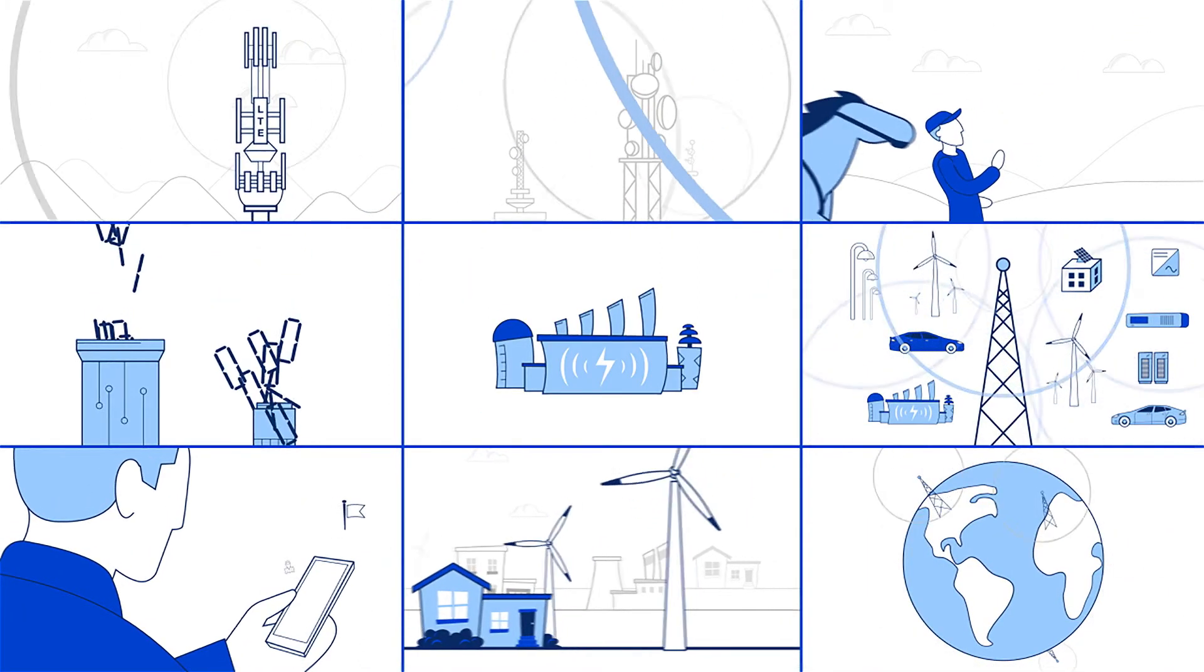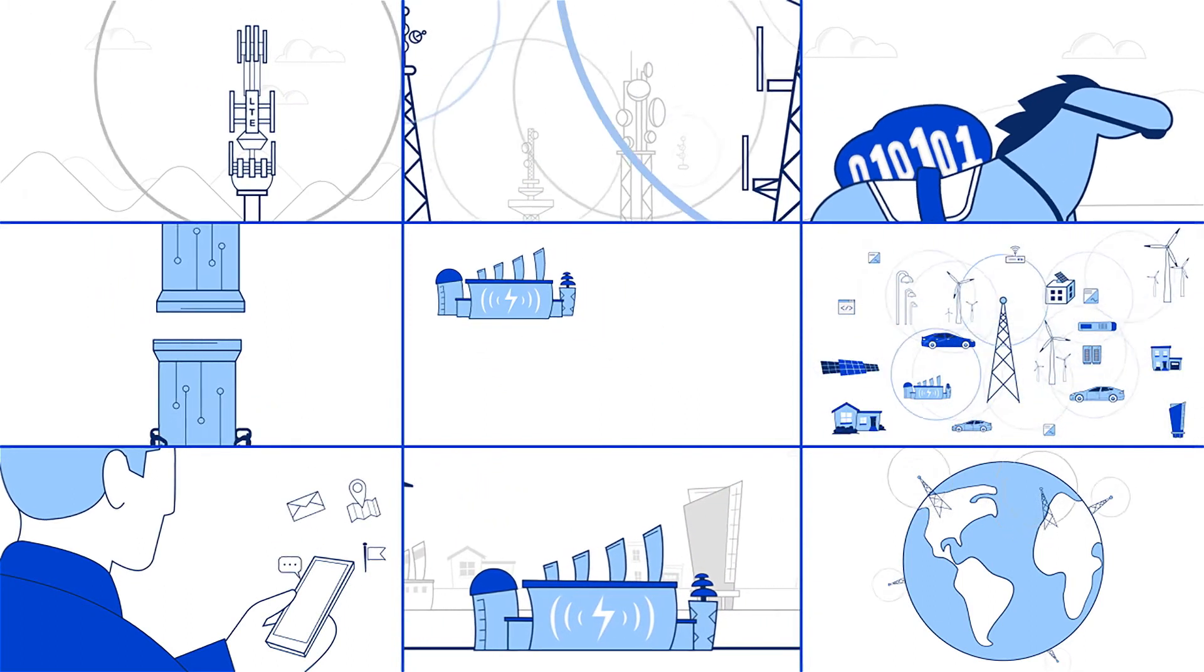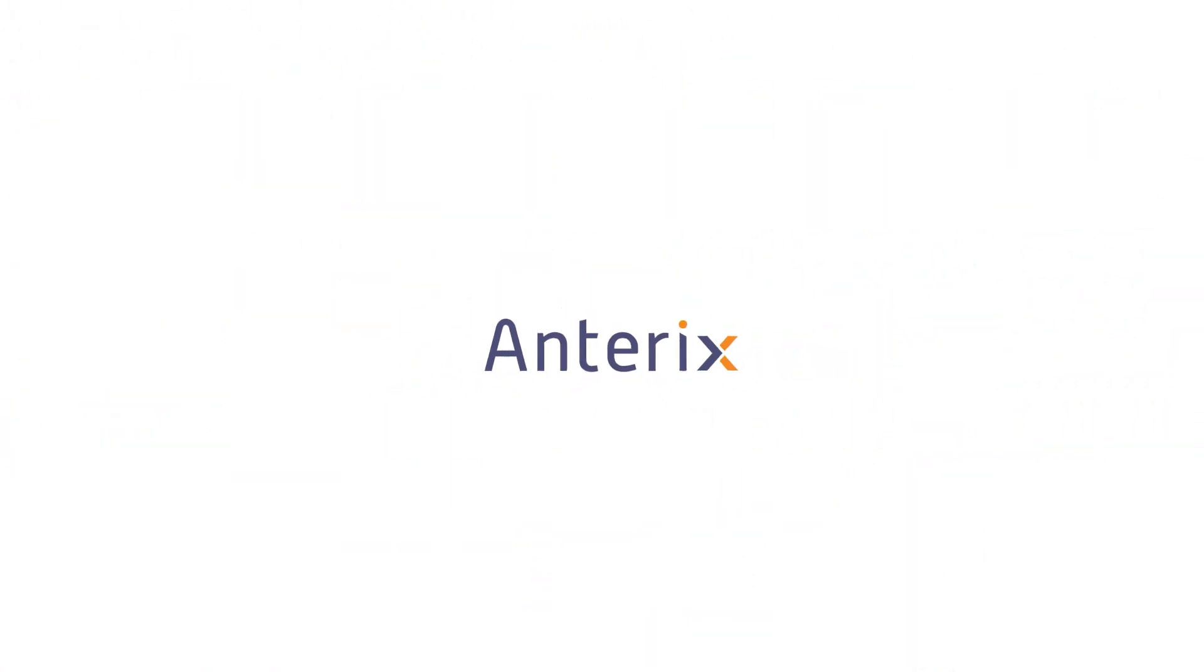Utilities will modernize on a wireless broadband network platform. Antarex will help make it happen with purpose-built LTE networks in the 900 megahertz band, the best options for the modern grid.